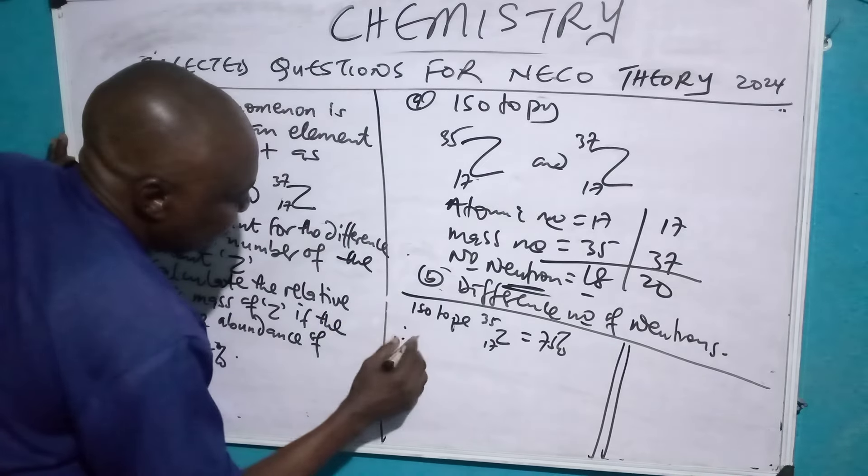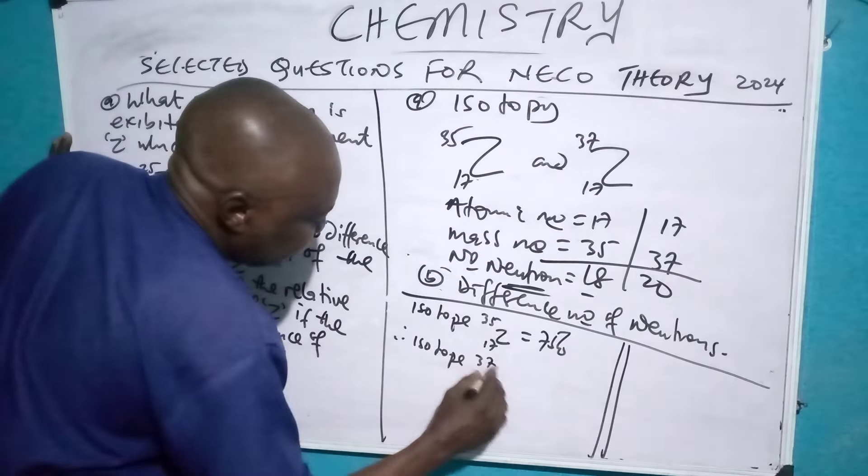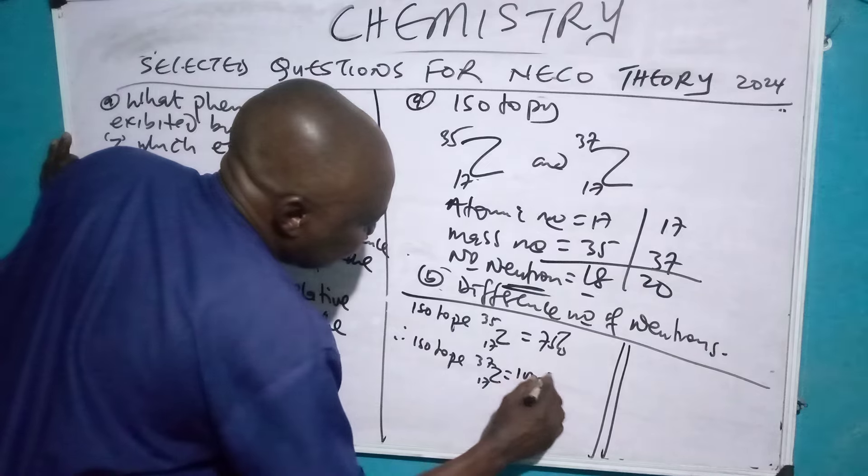Then, therefore, for isotope 37, is at 17, will be 100 minus 35, which is 65%. You see, we have got the isotope.